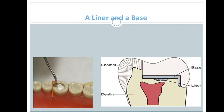Let's look here at the liner — this is the liner, calcium hydroxide. If you have a very deep cavity which is very close to the pulp, we put calcium hydroxide in order to make a reparative dentine, or secondary dentine, in order to protect the pulp from being sensitive. So calcium hydroxide forms secondary dentine which protects the pulp.